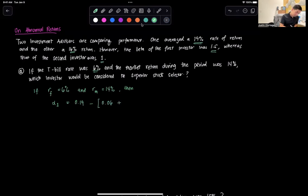The beta of the first investor was 1.5, times the rate of return of the market during the period, so that's 14%, or 0.14, minus the risk-free rate, which is 0.06. So formulaically, if you think about it, it's the rate of return of the investor R1 minus RF, plus beta 1, times RM minus RF. That's generally our formula for alpha 1.